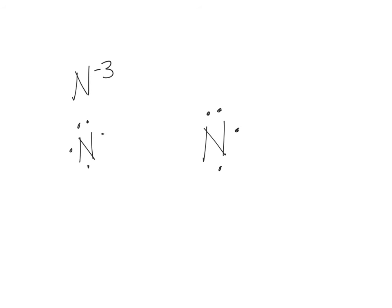And then we put brackets around it containing all of those electrons inside, and then the charge on the outside. And that's how you draw dot diagrams of atoms and ions.